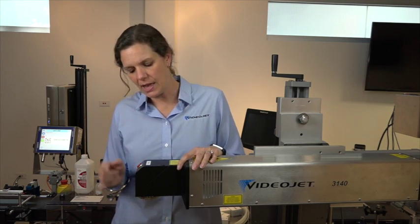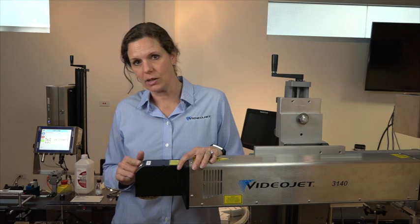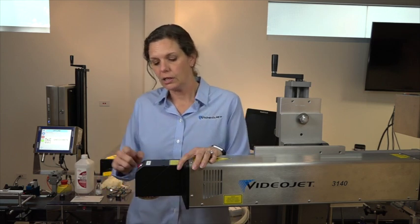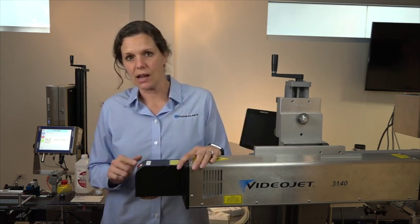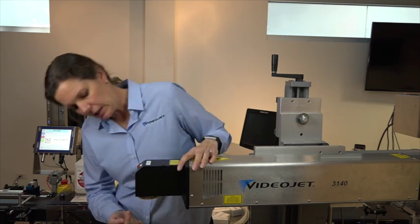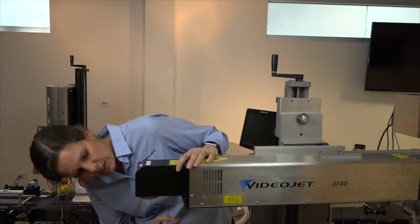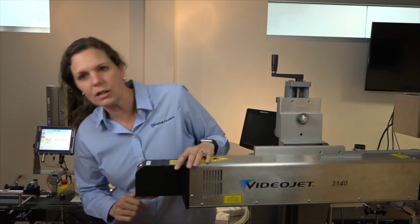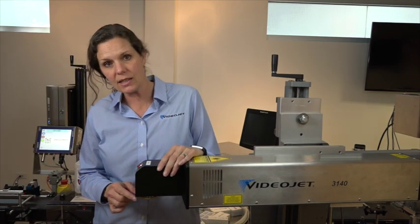Make sure before we inspect the lens that the red light on the marking head is off. That means that the laser is not armed. So make sure the red light is off. If you're able to get to the lens easily, we can just look to see if there's any debris on the lens.